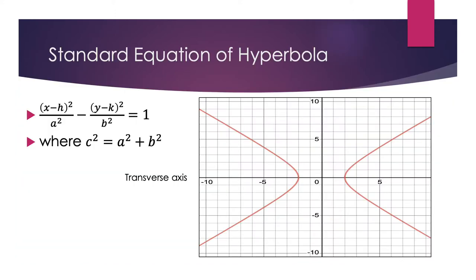Standard equation of a hyperbola. Let's say we have the equation in the form: (x minus h)² over a² minus (y minus k)² over b² equals 1. From this equation, the (x minus h)² over a² term is positive and the (y minus k)² over b² term is negative. So the transverse axis is a horizontal line.